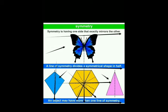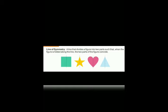A line of symmetry is a line that divides a figure into two parts such that when the figure is folded along the line, the two parts of the figure coincide. Whenever we take a line of symmetry, our figure is divided into two parts. In this square shape, when we draw a vertical line of symmetry, these two parts become divided and become the same.